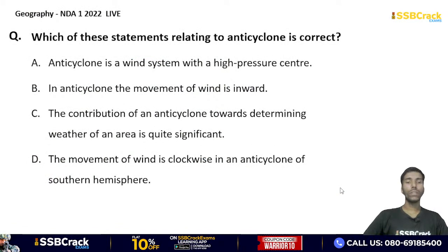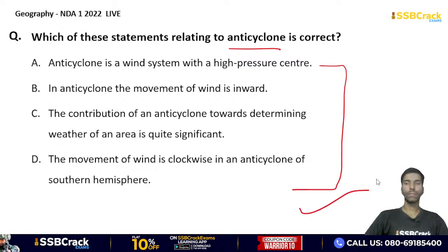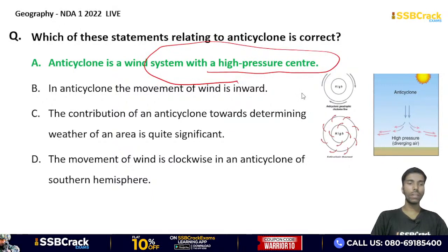Which of these statements relating to anti-cyclone is correct? An anti-cyclone is a wind system with a high pressure center; in anti-cyclone the movement of wind is inward; the contribution is quite significant toward weather; the movement is clockwise in the southern hemisphere? The correct answer is option A — an anti-cyclone is a wind system with a high pressure center. Where pressure is highest, the anti-cyclone phenomenon is observed.